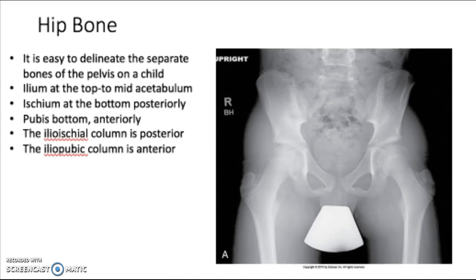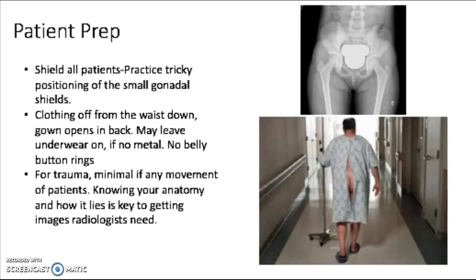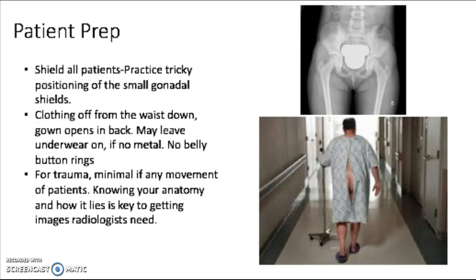Here's a child — you can see where the bones are not quite fused here yet, and not quite fused here yet either. That's how the bones come together at the acetabulum.